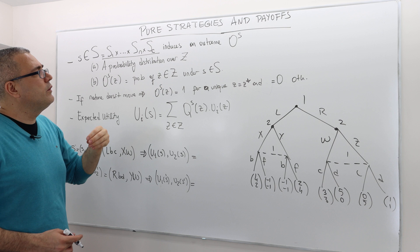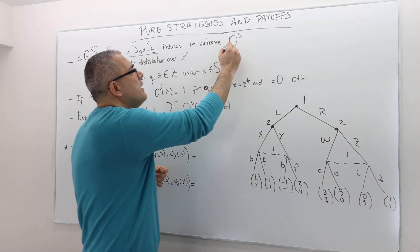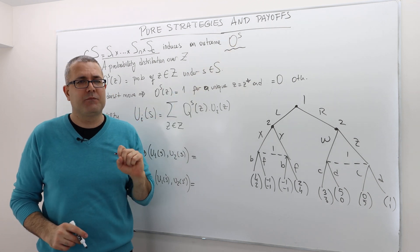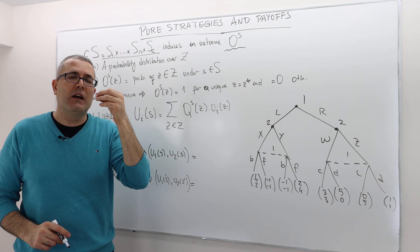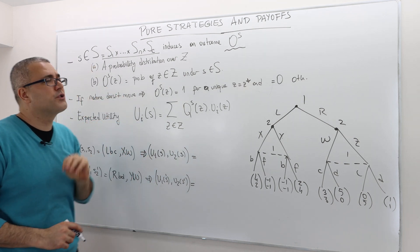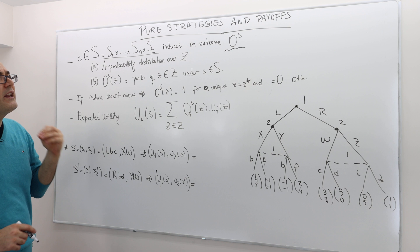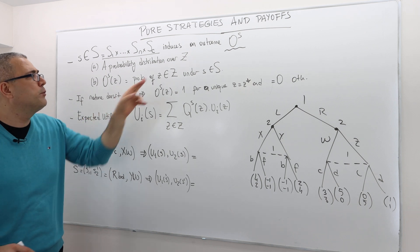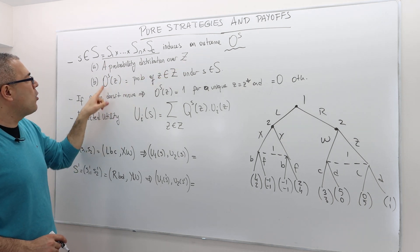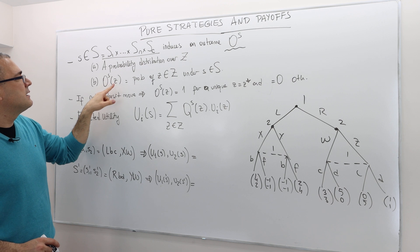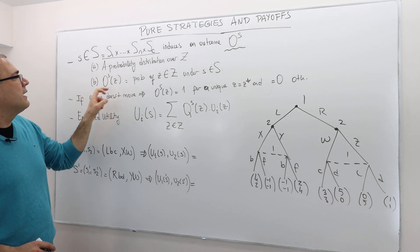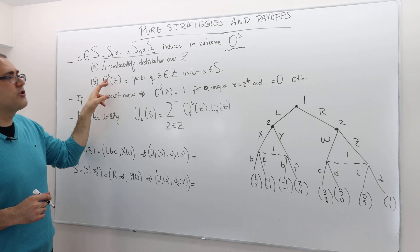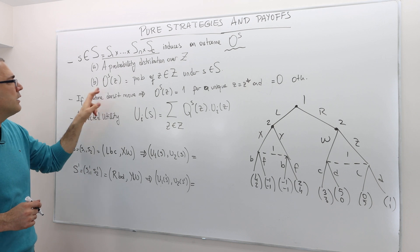A strategy profile is going to induce an outcome, and we denote this O superscript small s — the outcome function after pure strategy profile S. O^S is in fact a probability distribution over terminal histories. O^S(z) is the probability that terminal history z is going to occur under the strategy profile S.